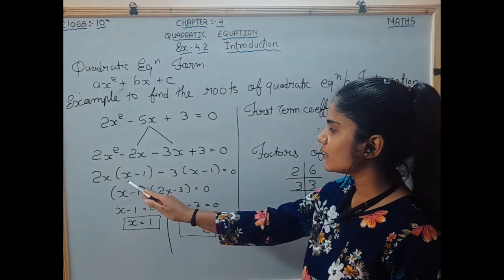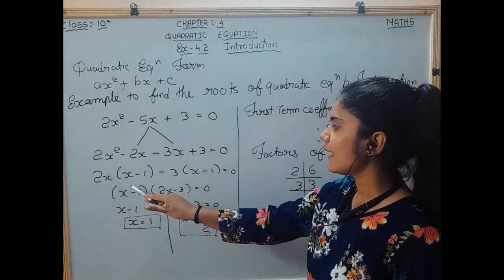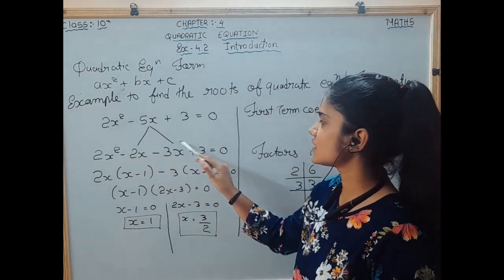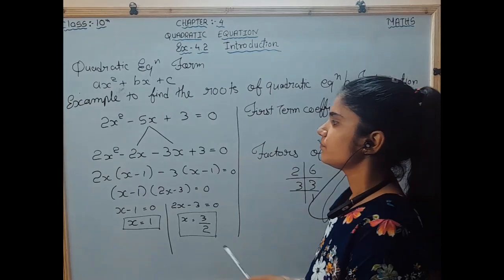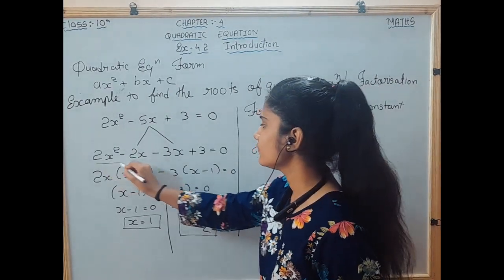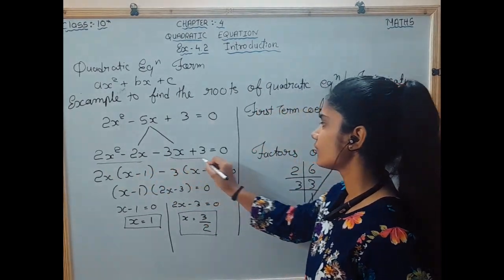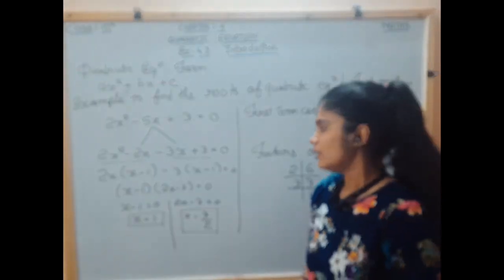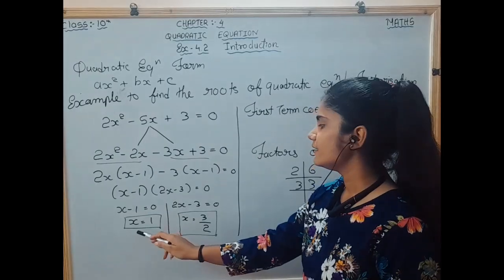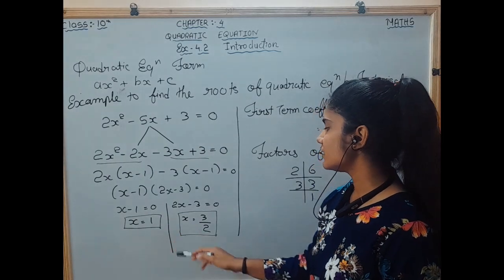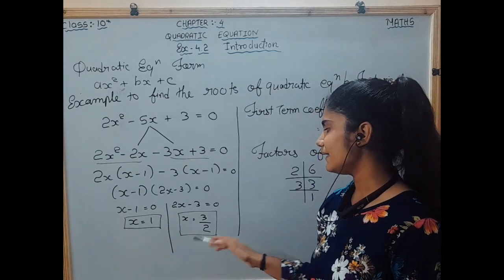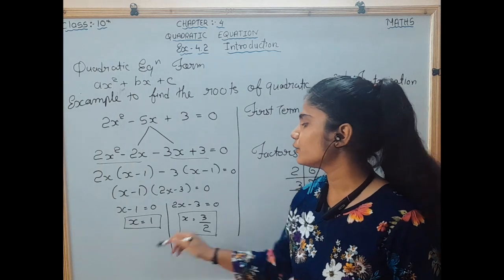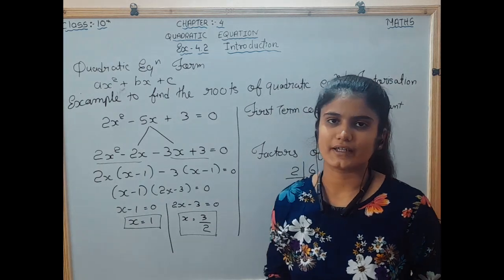We take the common factor from both parts of the pattern — for example x minus 1 and x minus 1 — and in the end we get the two answers of x, which are x equal to 1 and x equal to 3 by 2.